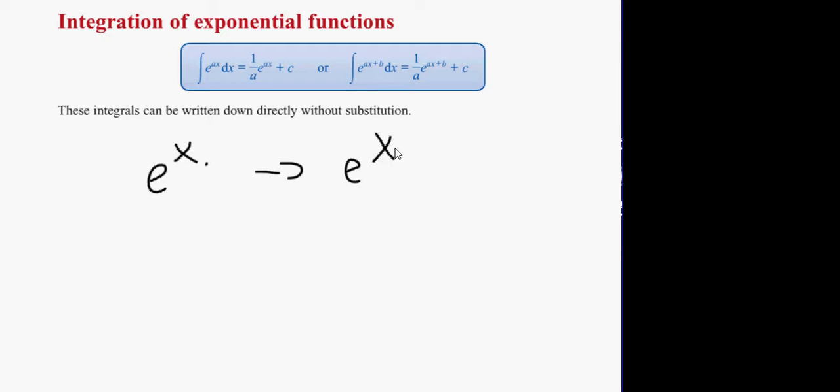Bottom line is e to the x never changes. Its power will never, ever change. It's like the angle in the sine and cos functions. It just doesn't change. So, I'm going to give you two examples here now, and we'll show you how to do these.